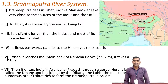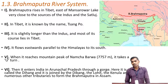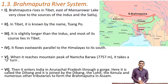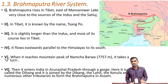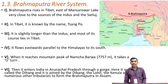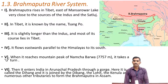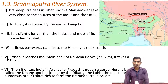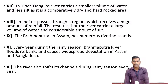It flows eastwards parallel to the Himalayas, and near Namcha Barwa it takes a U-turn and enters India first in the state of Arunachal Pradesh through a gorge. Here it is called Diham, and it is joined by Dibam, Lohit, Kinula, and numerous other small tributaries to form the mighty Brahmaputra river in Assam.